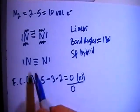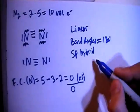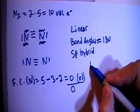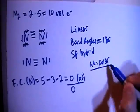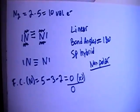And because these are both the same atom, they're both nitrogens, this is going to end up being a non-polar compound because each nitrogen will cancel out each other's dipole moment, giving you a net dipole moment of zero.